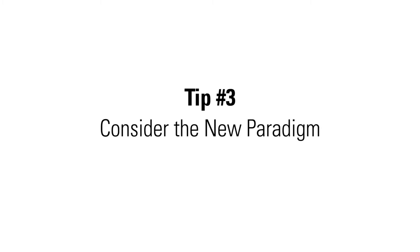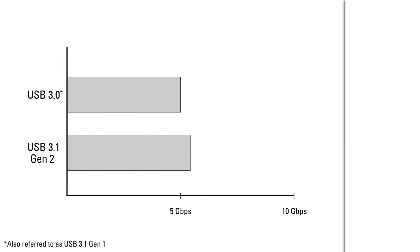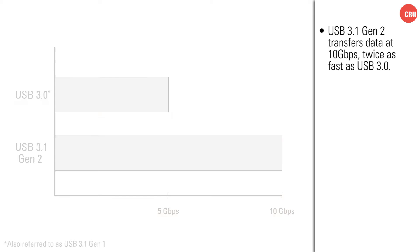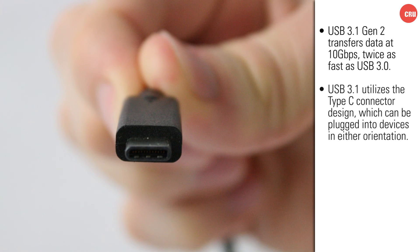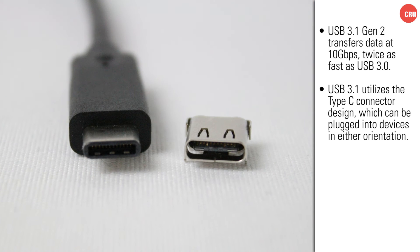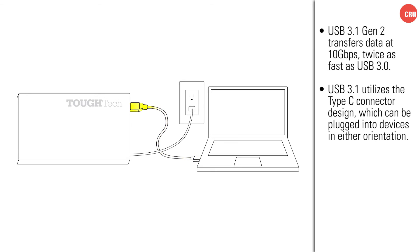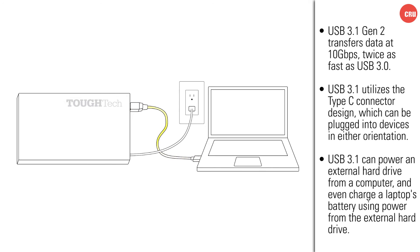The USB 3.1 Gen 2 specification defines three aspects that change how we think about external storage and other devices connected to our computers. The first is the data transfer rate of 10 gigabits per second, twice as fast as USB 3.0. USB 3.1 also brings with it the flippable Type-C universal connector. The Type-C connector has no up or down orientation, so there's no more guesswork on which way to plug in your USB Type-C cable. Next is the ability to deliver power to any device that it's plugged into, including an external hard drive. It can even power a laptop that's running low on battery power. That's just one example of how USB 3.1 minimizes the number of cables you have to use in order to operate a computer.